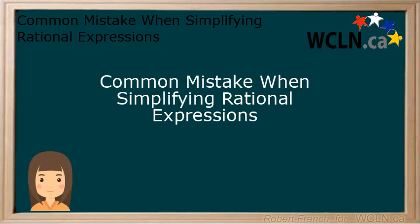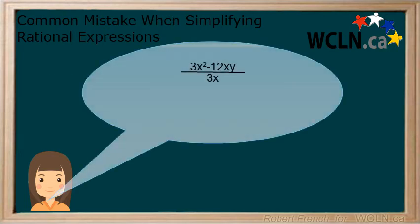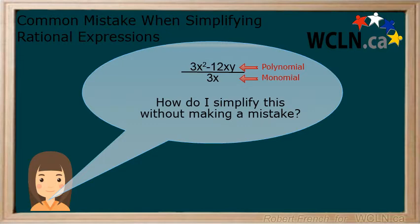In this tutorial we will be looking at how to simplify a rational expression where you have a single term or monomial in the denominator and a polynomial in the numerator that is a binomial or larger. We will also be looking at a common mistake that is made when simplifying these types of expressions.